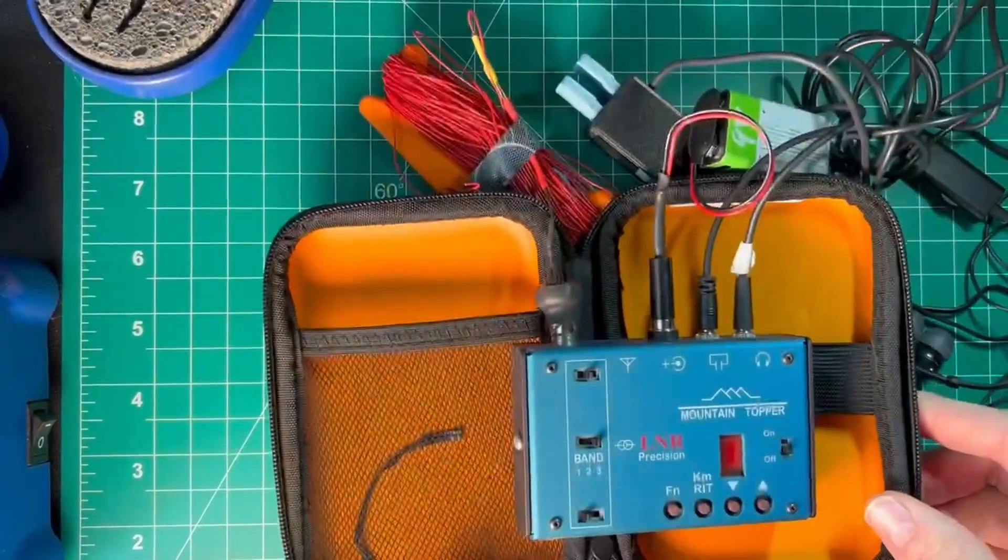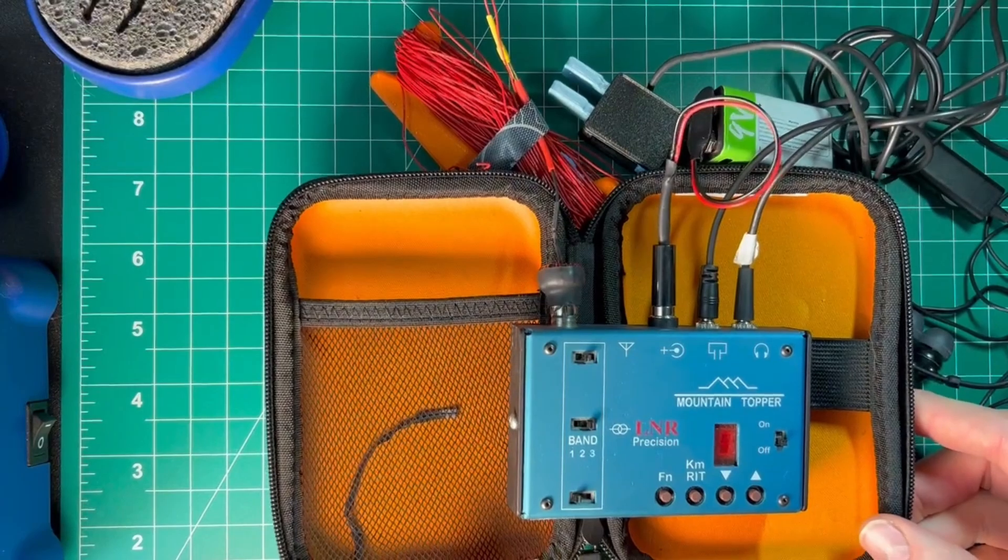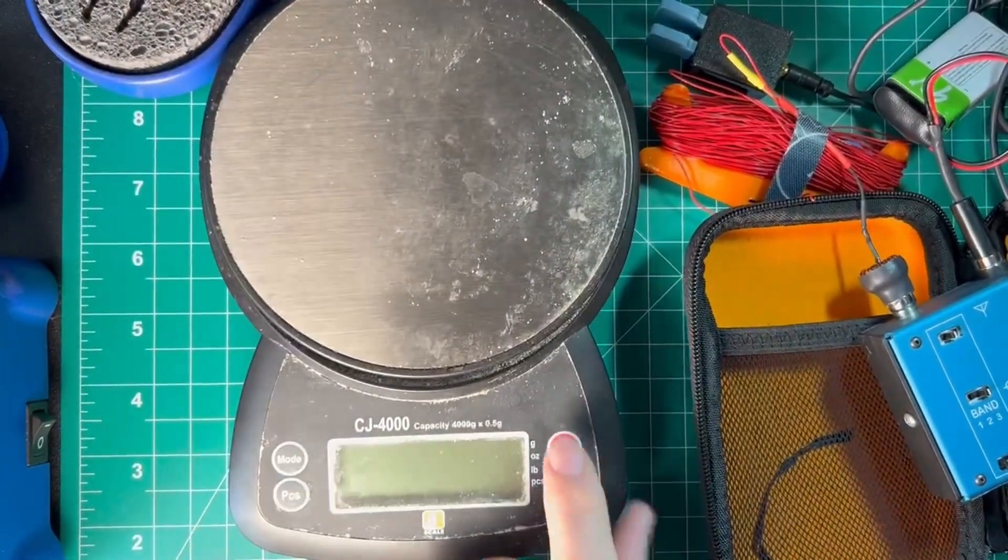So, that is the entire kit for HF. Now, of course, what everyone wants to know is the weights.